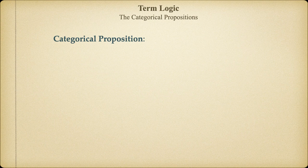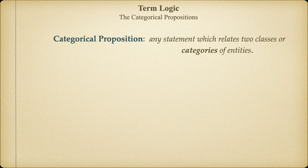Aristotle's system of deduction is built upon the foundation of the categorical proposition. Now, we've already learned that a proposition is the meaningful content of a statement, but what makes a proposition categorical? The answer is simple: whenever a proposition asserts or denies a relationship between two classes of existing things. Well, maybe that's a little too simple of an answer, but it'll do for present purposes.